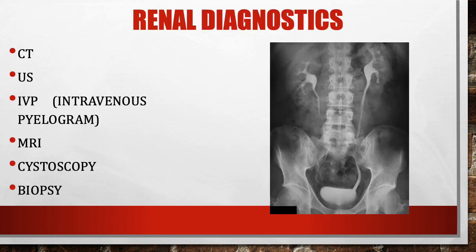Diagnostic imaging tests for the kidneys include CT, ultrasound, and MRI, which allow us to visualize the external kidney structures and identify deformity, trauma, or other issues. An IVP, or intravenous pyelogram, uses dye to look for obstructions and illuminate the kidney structures. Cystoscopy allows us to look inside the tubes and structures, and a biopsy can reveal damaged kidney tissue.